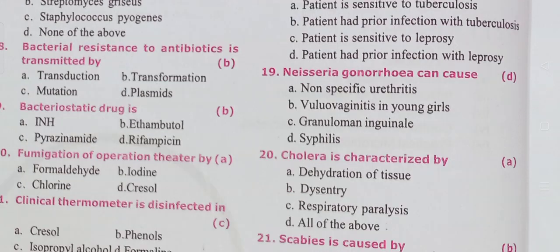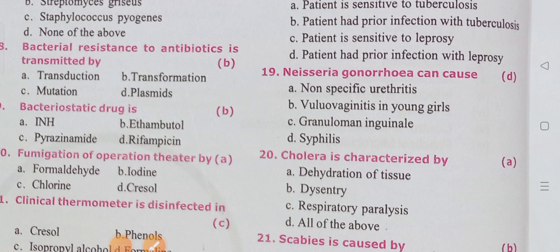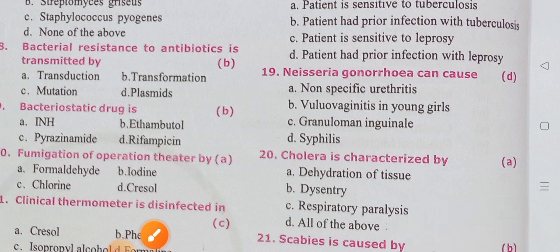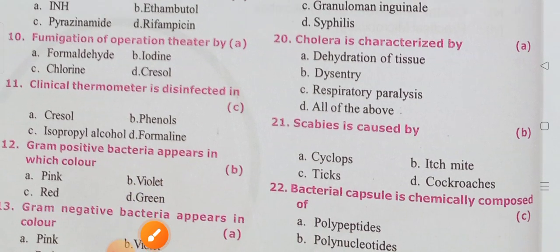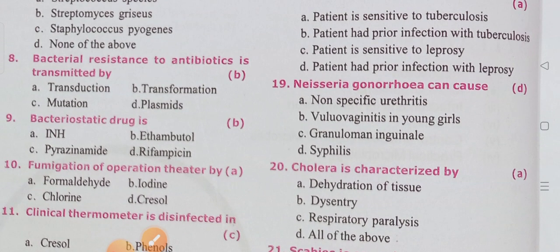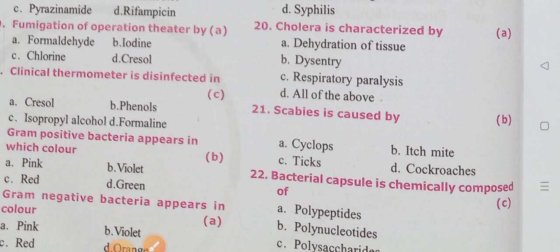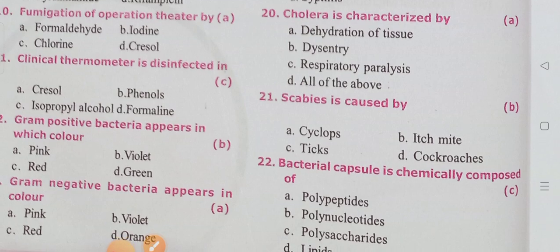Neisseria gonorrhoeae can cause gonorrhea — the correct answer is option D. It is also one of the sexually transmitted diseases. It does not cause syphilis.